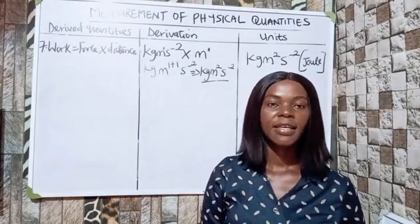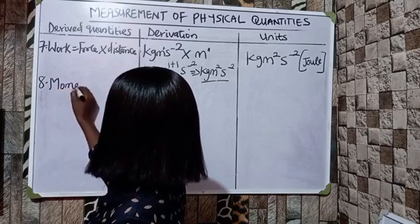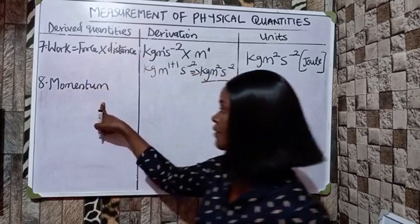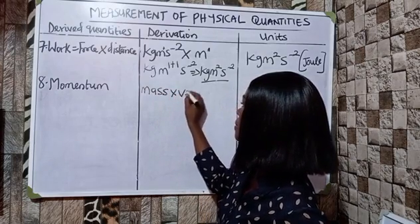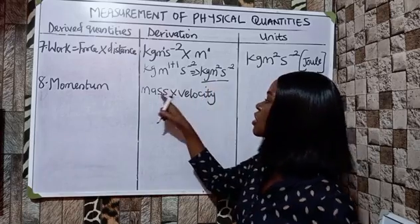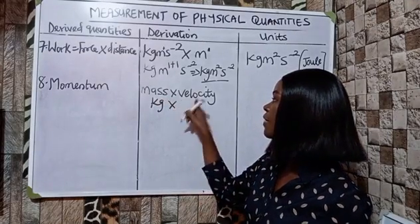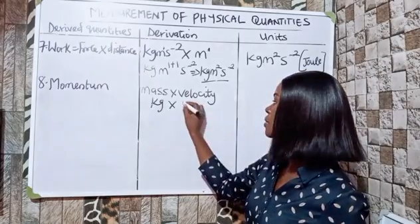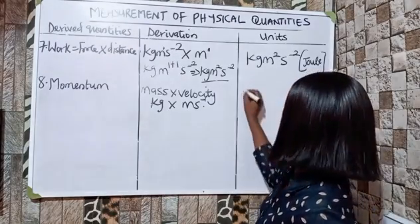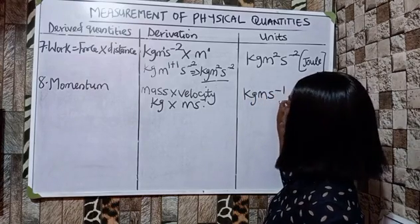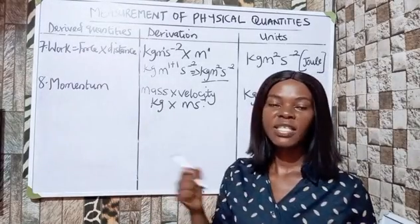Momentum is defined as mass times velocity. Mass is measured in kilogram and velocity is measured in meters per second. Multiplying the two together gives the unit for momentum: kilogram meters per second — kg·m·s⁻¹.